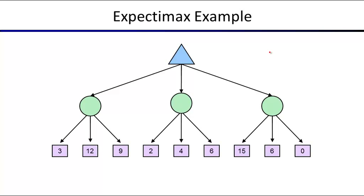A student asks: in the Pac-Man example with two ghosts, wasn't there an equal chance that each ghost would come toward Pac-Man? If it's equal for both, how did it change Pac-Man's behavior?